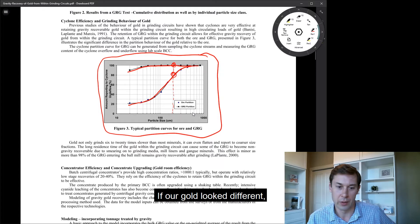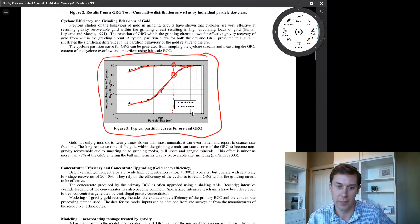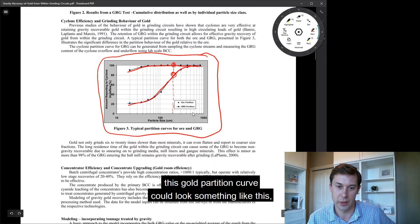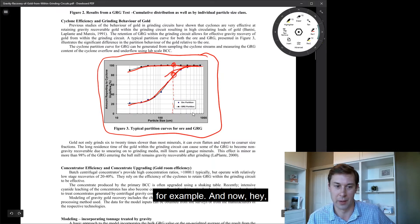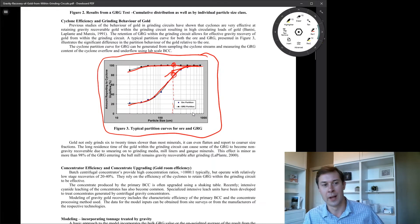If our gold looked different, let's say it was all very fine, this gold partition curve could look something like this, for example. And now we're only retaining 85% or 90% of the gold in the grinding circuit.